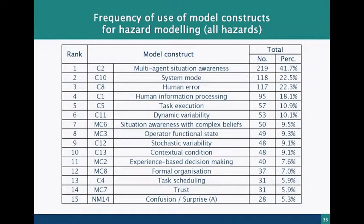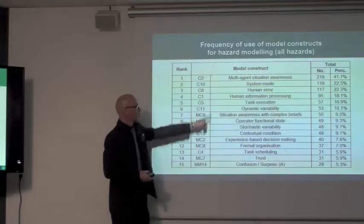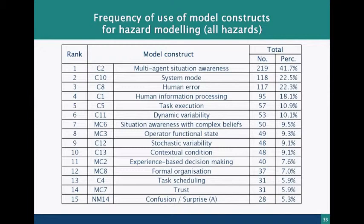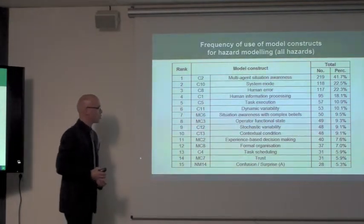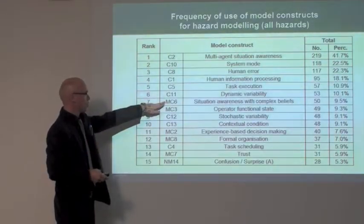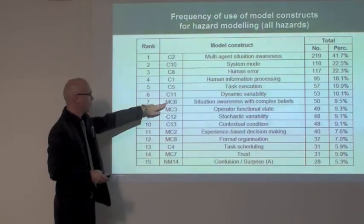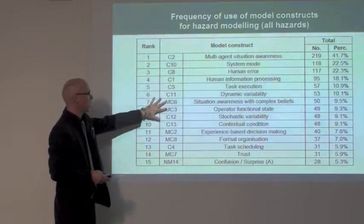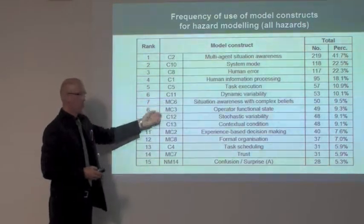Looking at which model constructs were most frequently used to represent hazards: multi-agent situation awareness is used for modelling more than 40% of hazards — a very important construct in an agent-based system, used to describe all kinds of confusion between human operators and regarding technical systems. System modes, human error, and human information processing are each used in about 20% of cases. New constructs — situation awareness with complex belief, operator functional state, and experience-based decision making — are also used quite frequently.